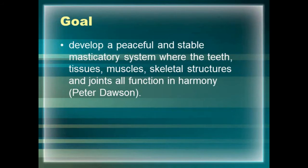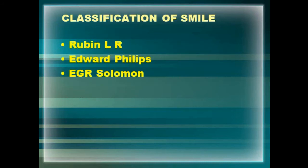As per Peter Dawson, the goal of smile designing is to develop a peaceful and stable masticatory system where the teeth, tissues, muscles, skeletal structures, and joints all function in harmony. In order to establish this, we have to understand the interrelationship between the supporting oral structures, which includes teeth, bones, gingiva, occlusion, and so on.